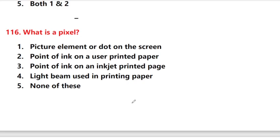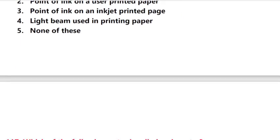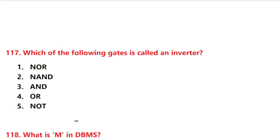What is a pixel? Pixel means option 1: picture element, or a dot on the screen. Which of the following gates is called an inverter?